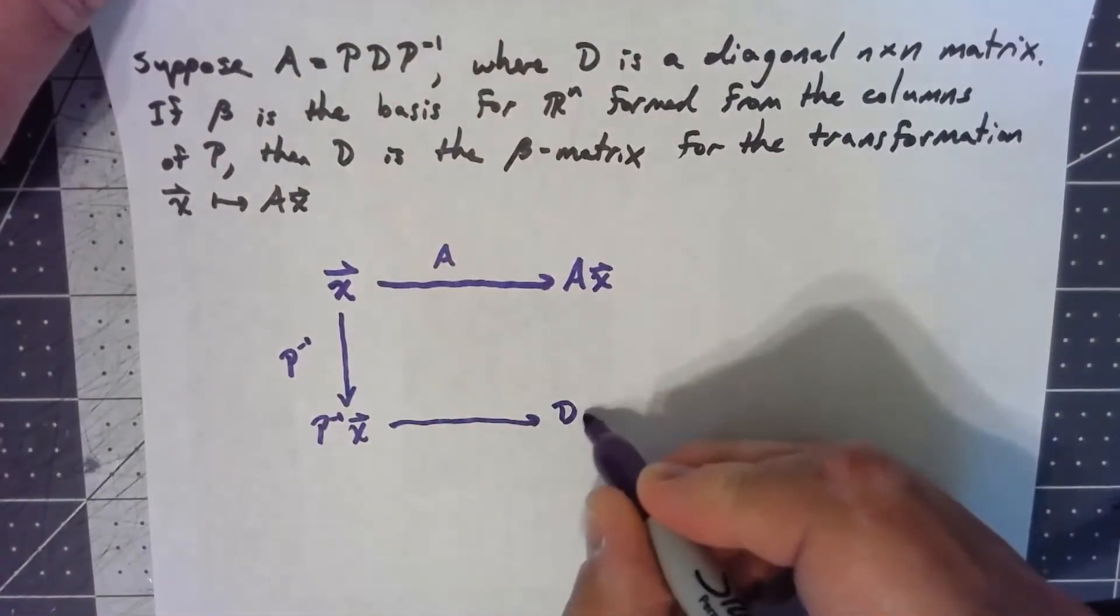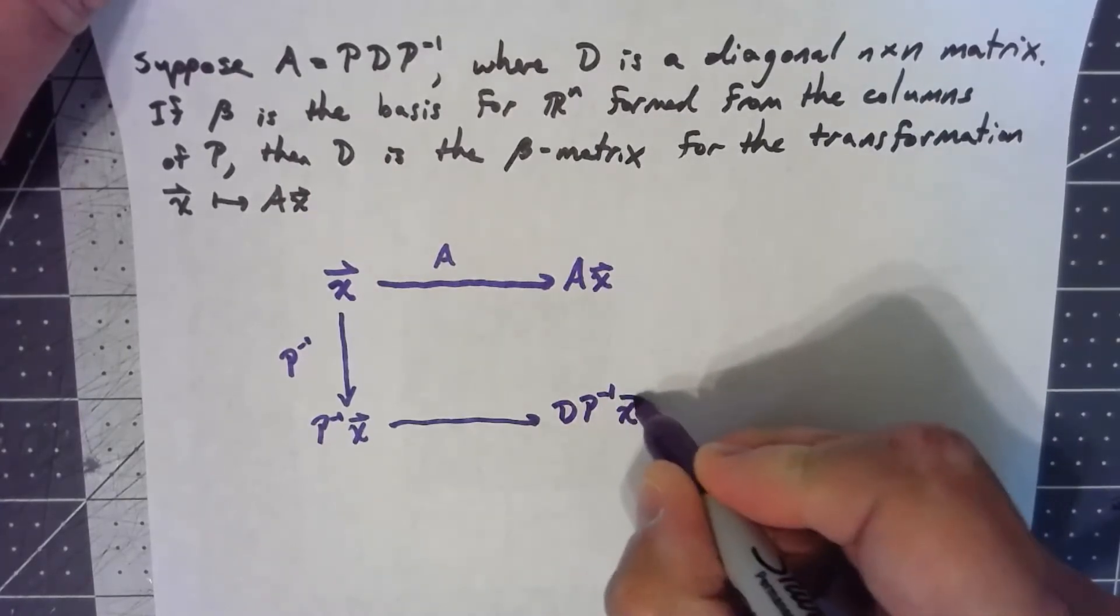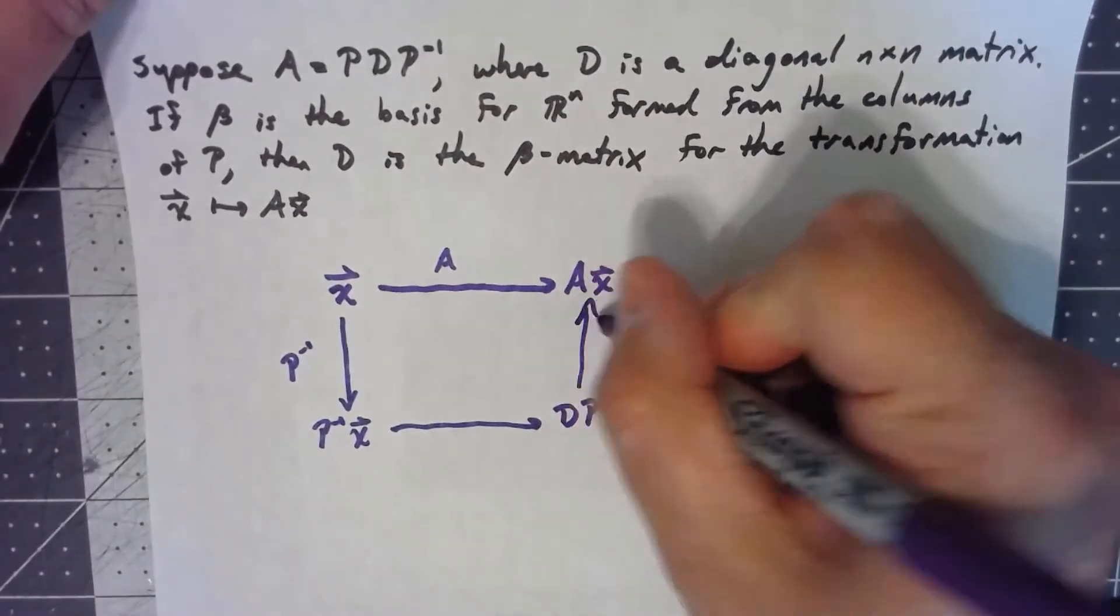then we multiply by D, then we multiply by P.